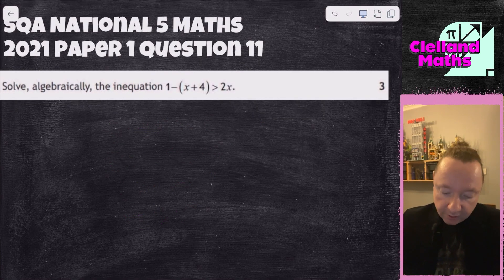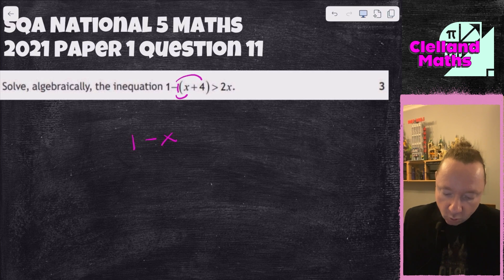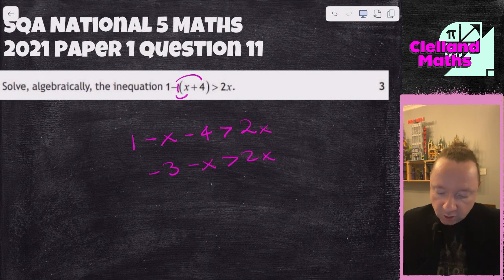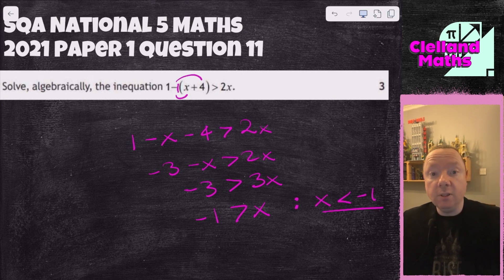SQA National 5 Maths 2021 Paper 1 Question 11: 1 - (x + 4) > 2x. When you see just a minus bracket, imagine there's a little 1 there, so you're multiplying by minus 1. That gives 1 - x - 4 > 2x, so -3 - x > 2x. Add x to both sides: -3 > 3x. Dividing by 3 — not dividing by a minus, so no flip — gives -1 > x. Or if you prefer: x < -1. And we're done there.